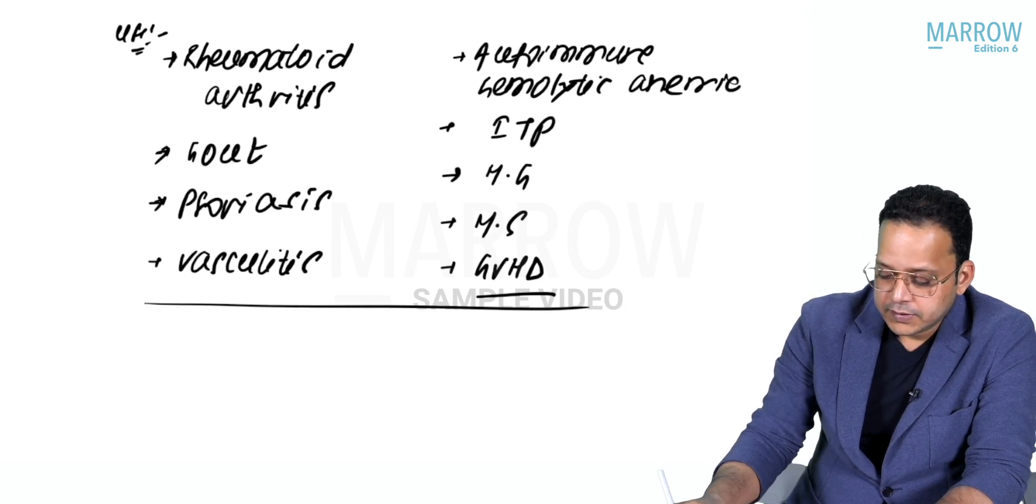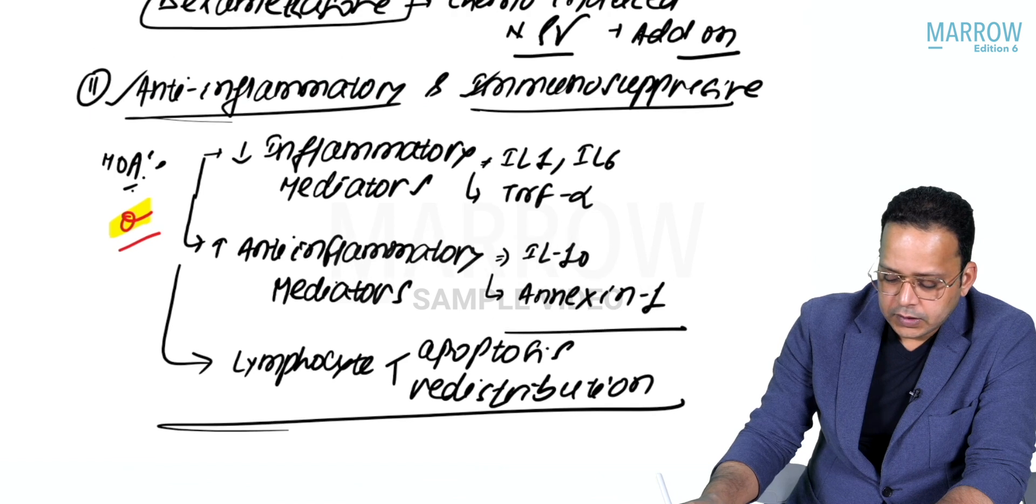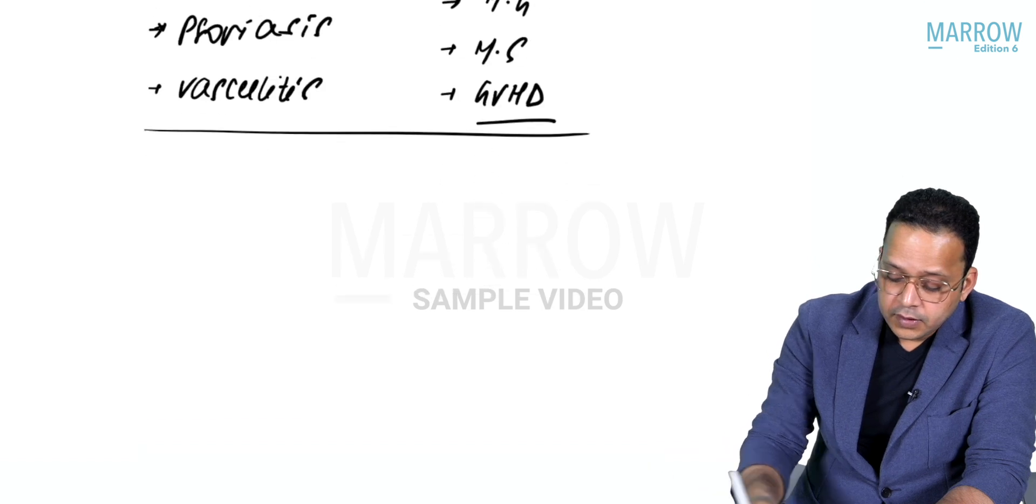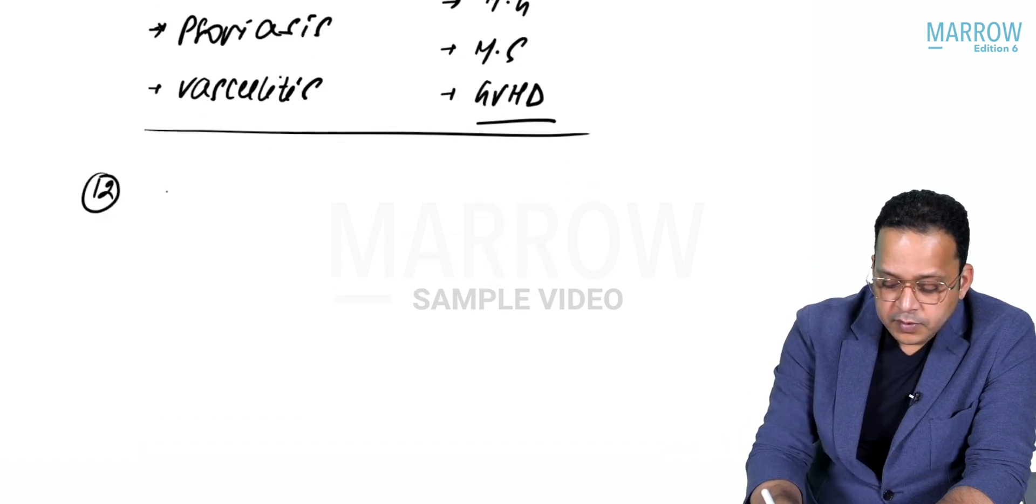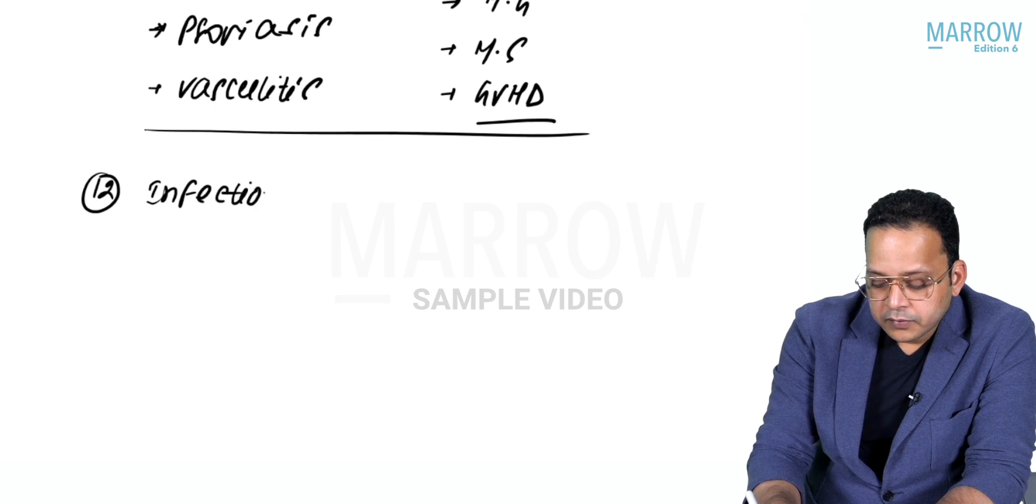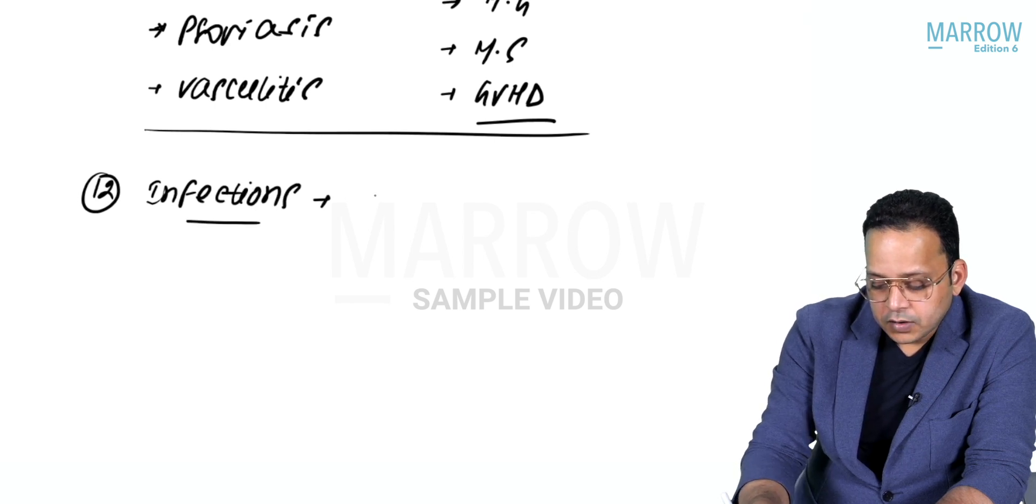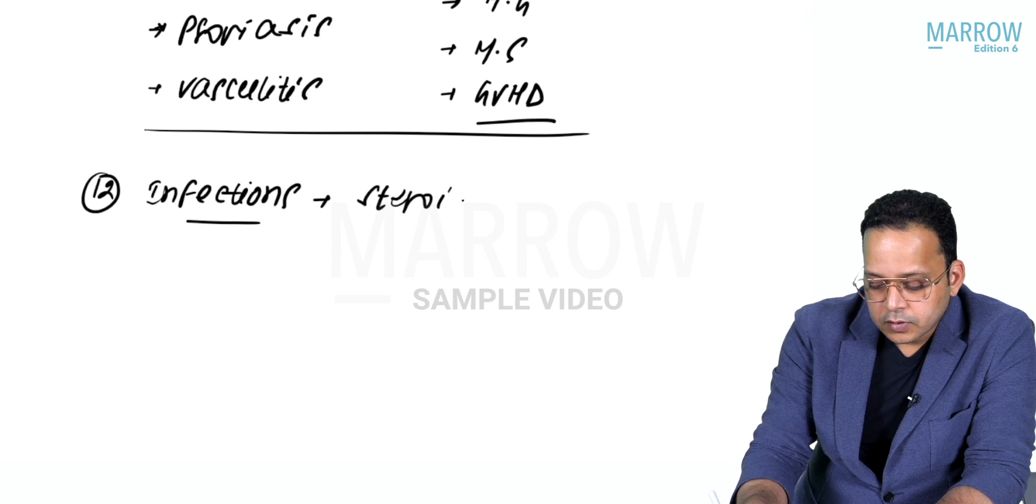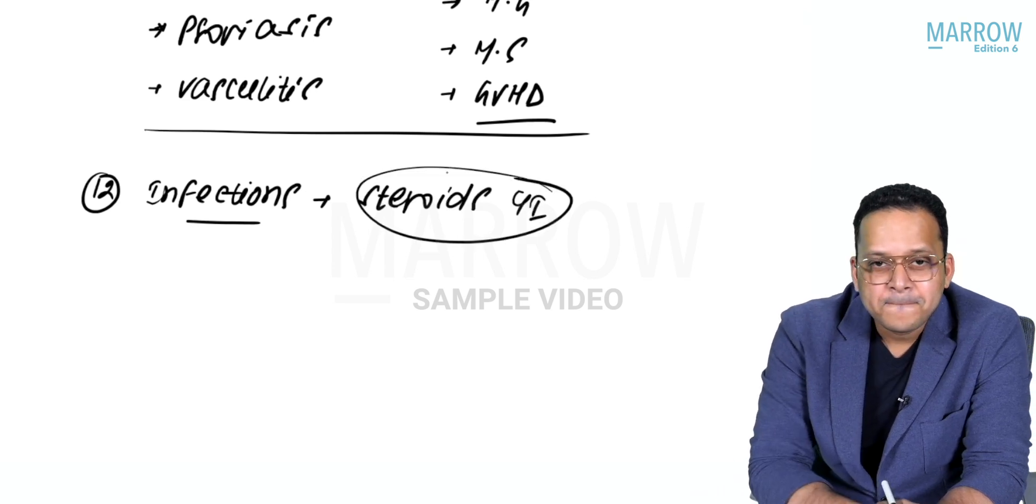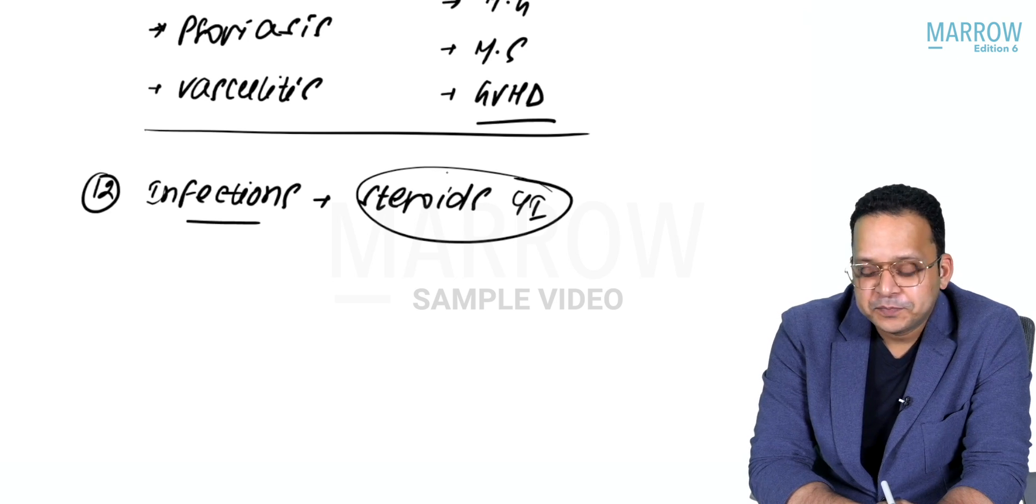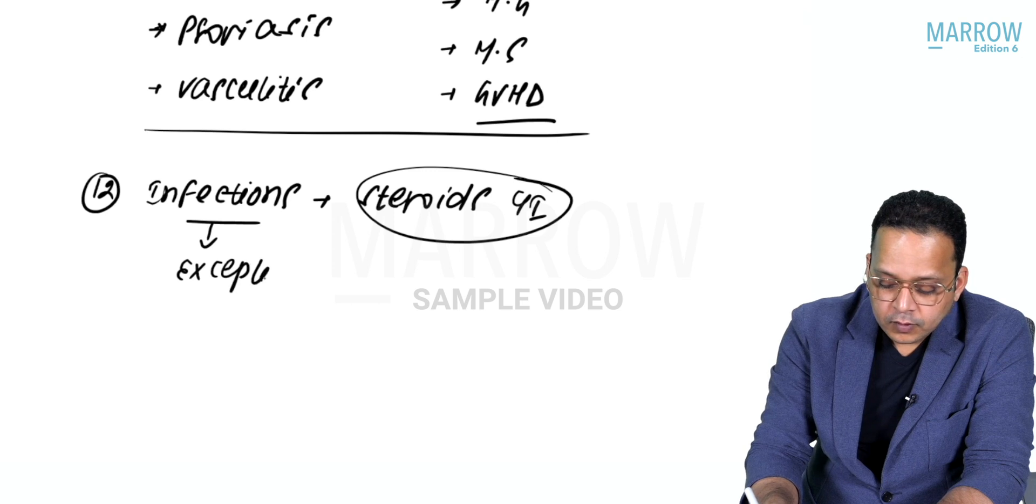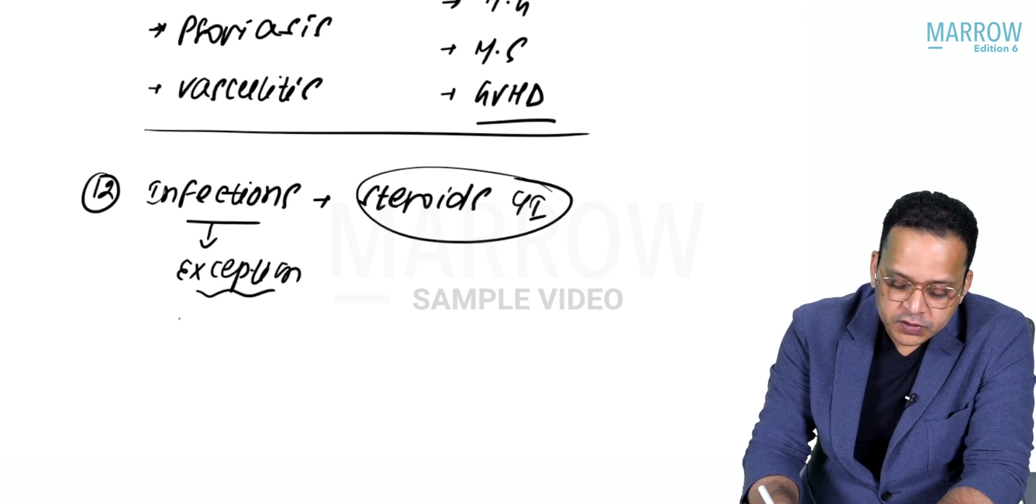Finally, number 12: whenever I talk about infections, steroids are usually contraindicated because they'll worsen it. But there are a few exceptions - some types of infections where steroids are life-saving.